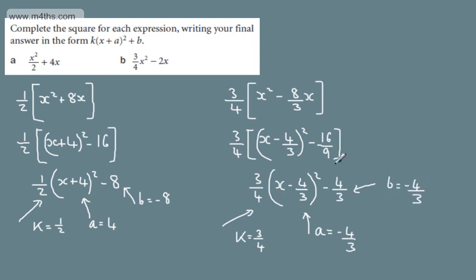So we've completed the square initially by taking out the factor of 3 quarters. We complete the square within the bracket and then multiply through.